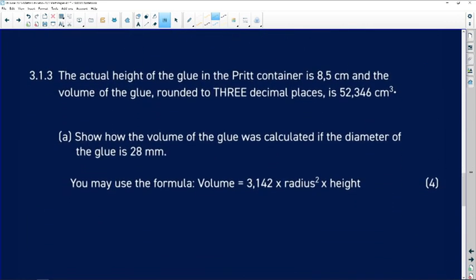The actual height of the glue in the Prit container is 8.5 centimeters. So if they're saying actual height, they mean in real life. And the volume of the glue to three decimal places is 52.346 centimeters cubed. Show how the volume of the glue is calculated if the diameter of the glue is 28 millimeters. So volume, we are given a formula for volume there already. And the nice thing, we are already given pi. So volume is equals to 3.142 and then radius.